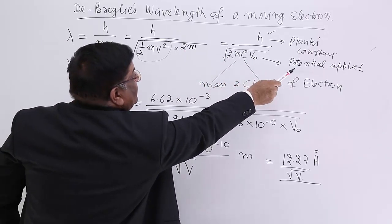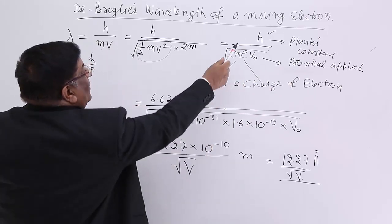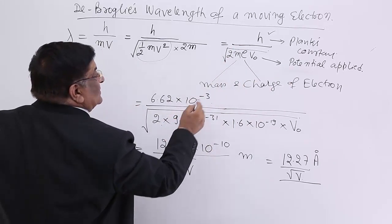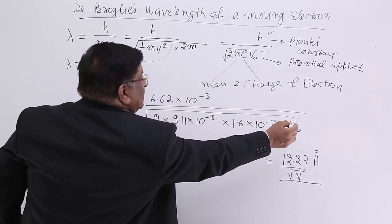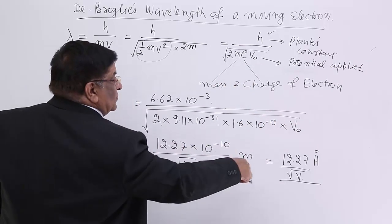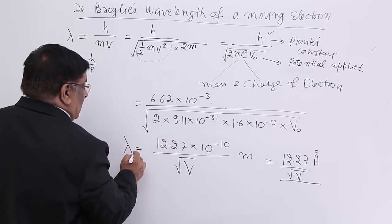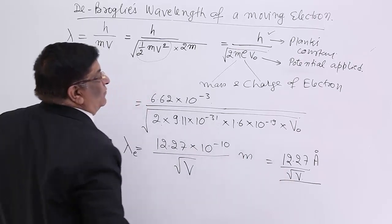V₀ is the potential which is applied to pull the electron. Putting the values—Planck's constant, mass of electron, charge of electron, and V₀ whatever is applied—this comes to 12.27/√V angstroms. This is the wavelength of electron under potential V.